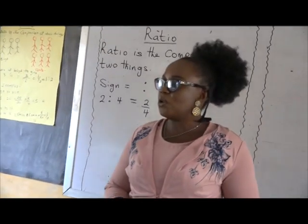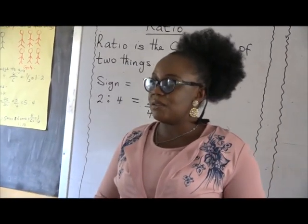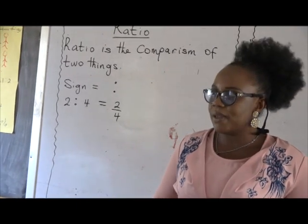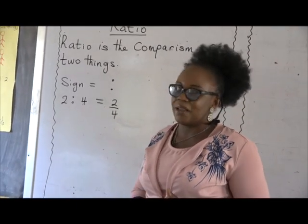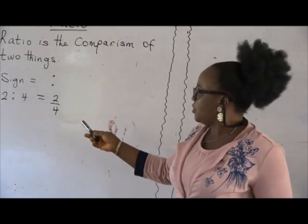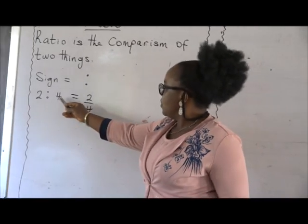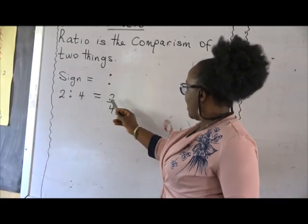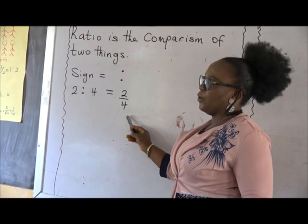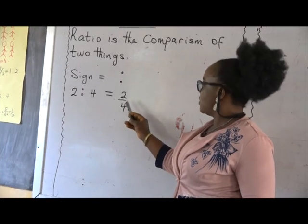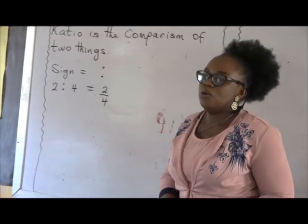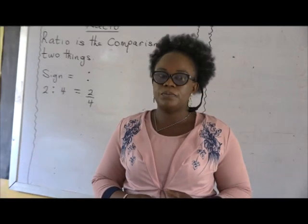Ratio can also be written as a fraction. You can write it as a fraction — it's just like a fraction. We have two ratio four, so it is written as two over four.